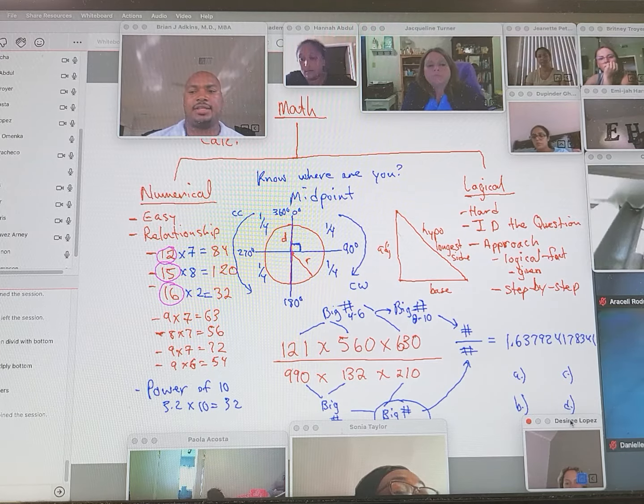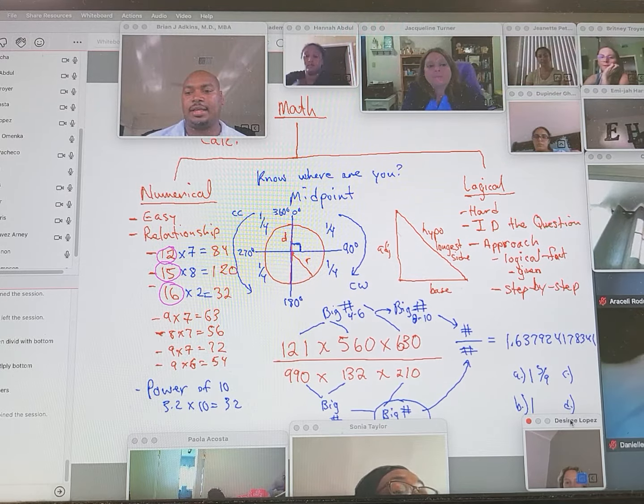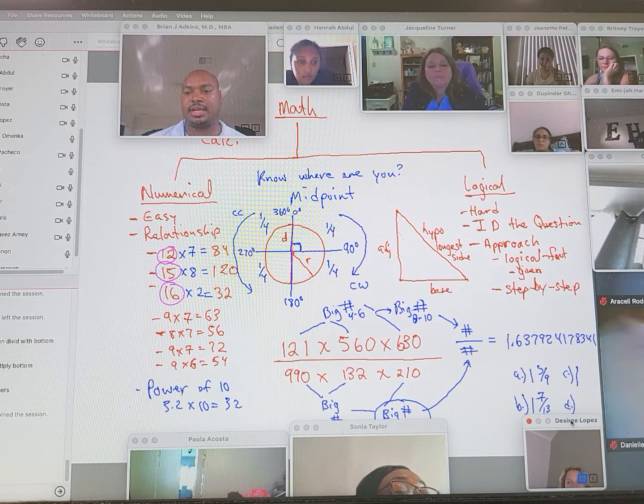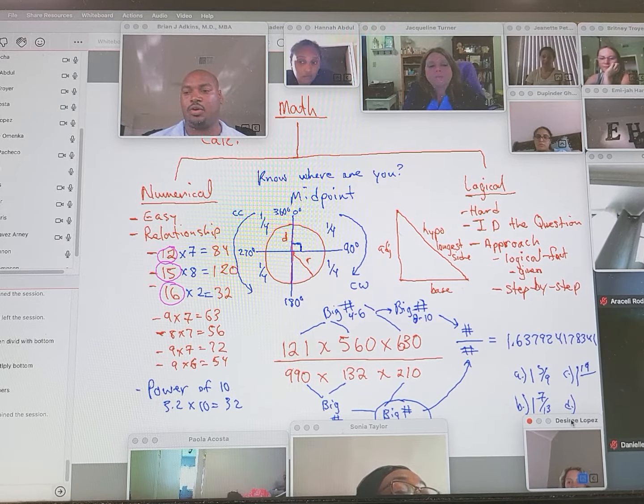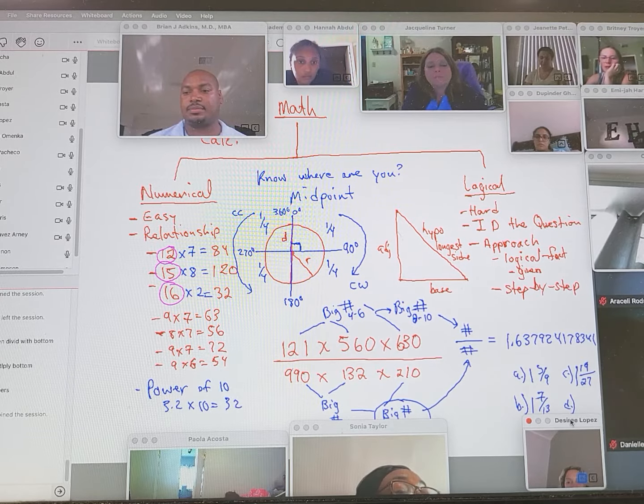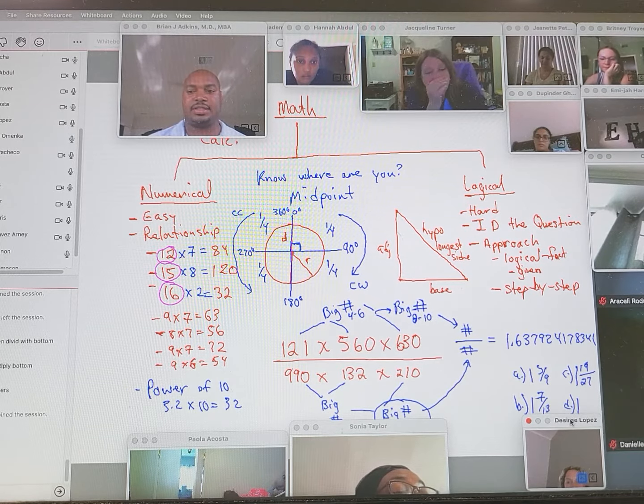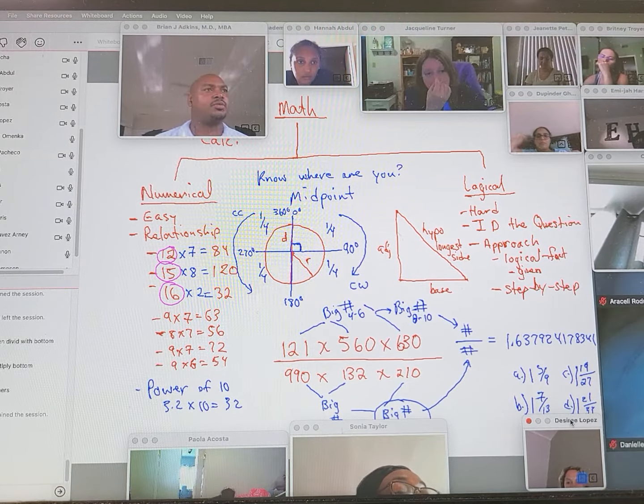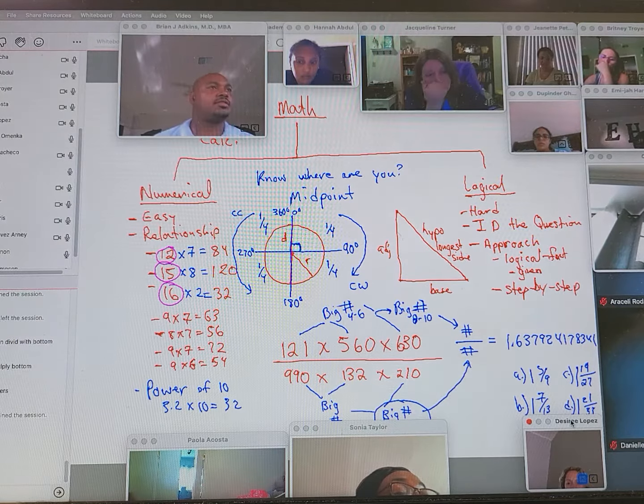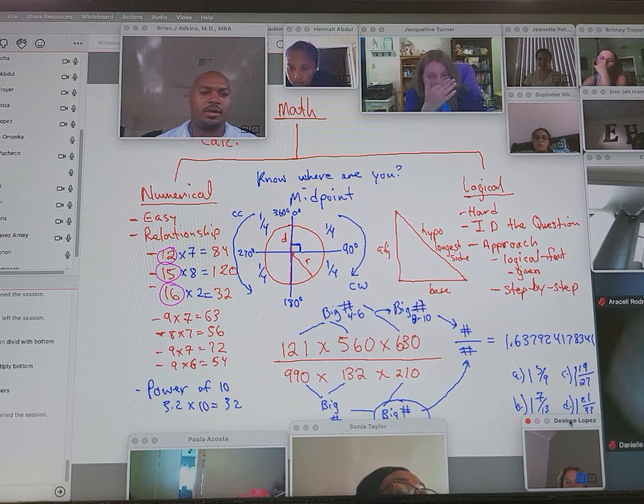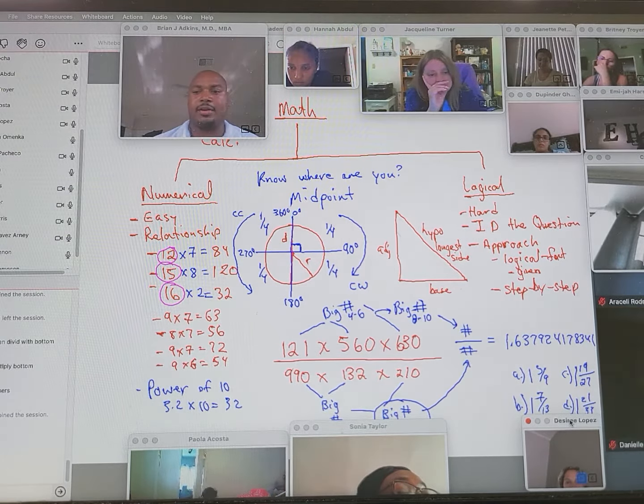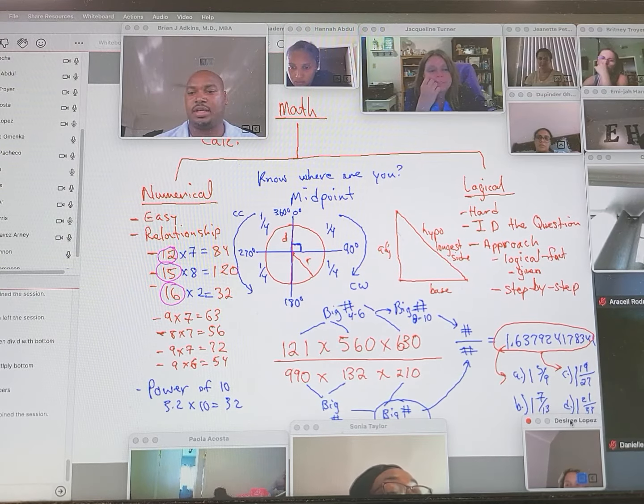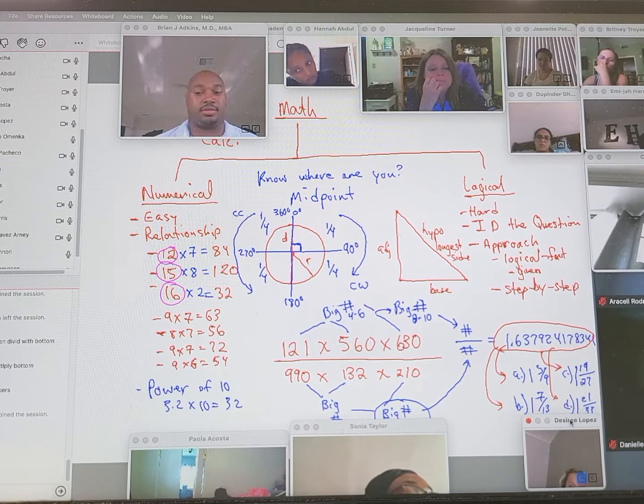Okay. So now with that, let's say A says one and five over nine. Answer choice B says one and seven over 13. Let's say answer choice C says one and 19 over 27. Let's say answer choice D says one and 21 over 33. Any idea which one of those answer choices would be the correct answer? Right.